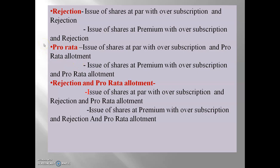In the previous video we discussed the meaning of oversubscription and the three alternatives: first is rejection, second is pro-rata allotment, and third is rejection and pro-rata allotment. In the previous video we also covered one practical problem on rejection — issue of shares at par with oversubscription. In this video we are going to solve a practical problem on issue of shares at premium with oversubscription and rejection.